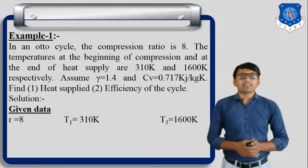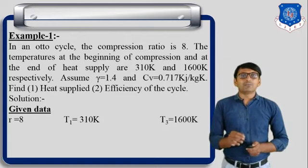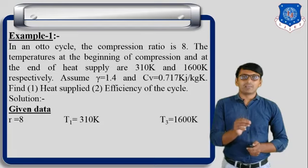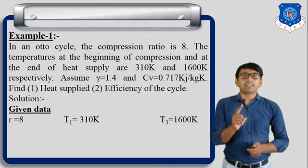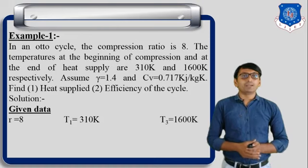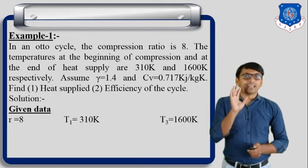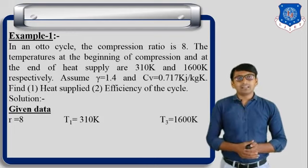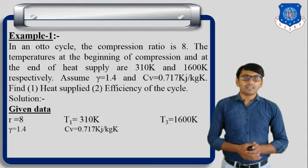In this example, R equals 8, where R means compression ratio. Temperature T1 is equal to 310 Kelvin — T1 is the minimum temperature of the cycle, or temperature at the beginning of the compression stroke. T3 is equal to 1600 Kelvin — T3 is the maximum temperature of the cycle, or temperature at the end of heat supply. Gamma is 1.4 and Cv is 0.717 kilojoule per kg Kelvin.